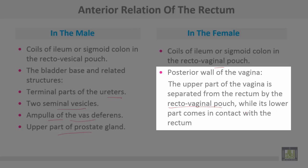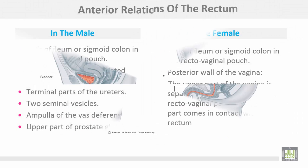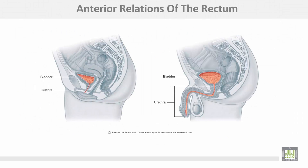The lower part of the vagina comes in contact with the rectum directly. This is the anterior relation of the rectum in females — here is the vagina. In the male, the rectum is related to the lower part of the vas deferens, seminal vesicle, and prostate gland.